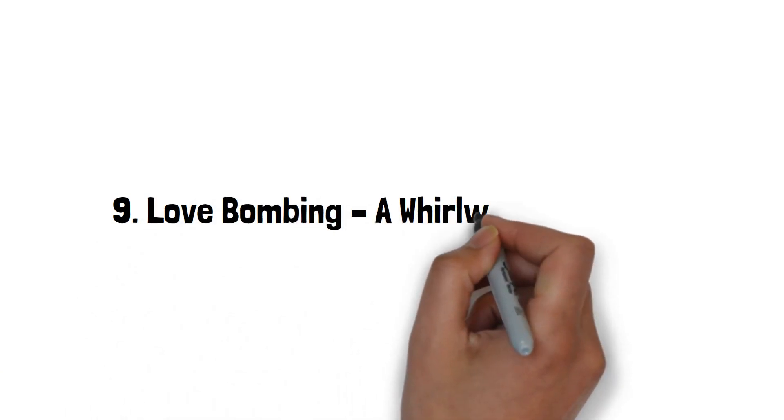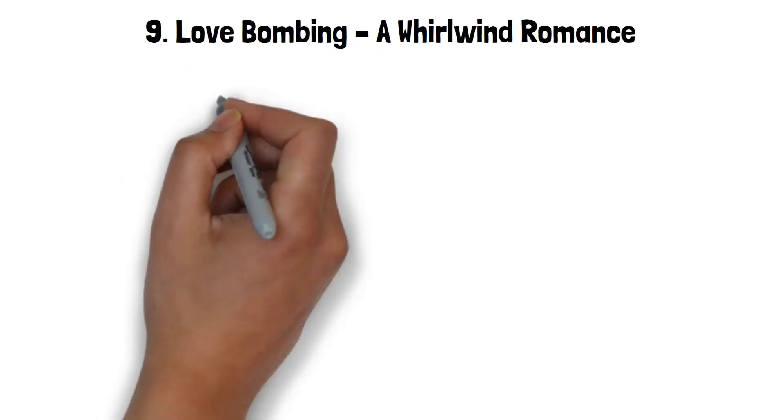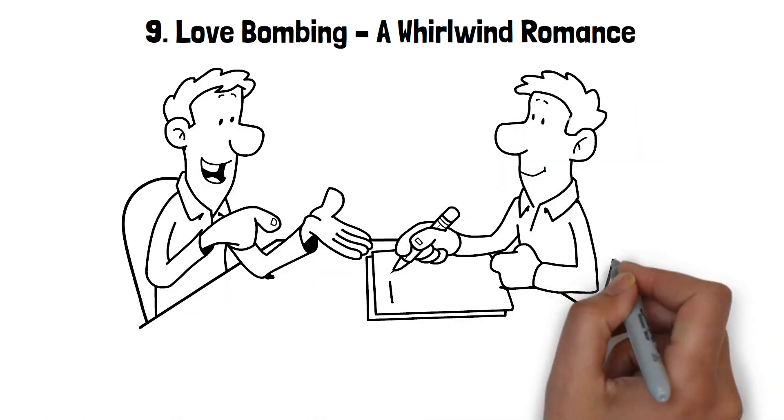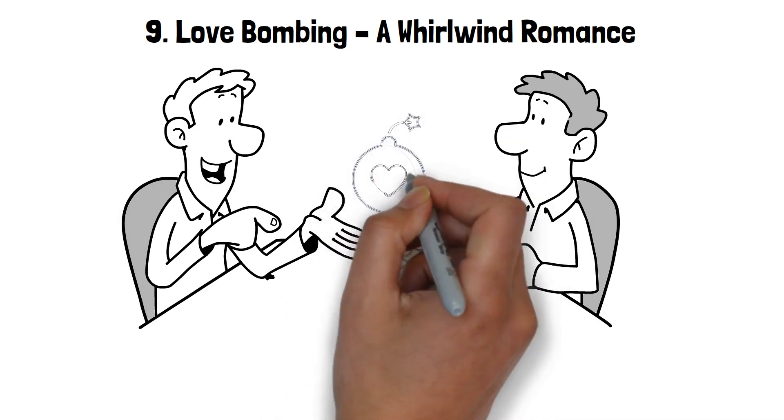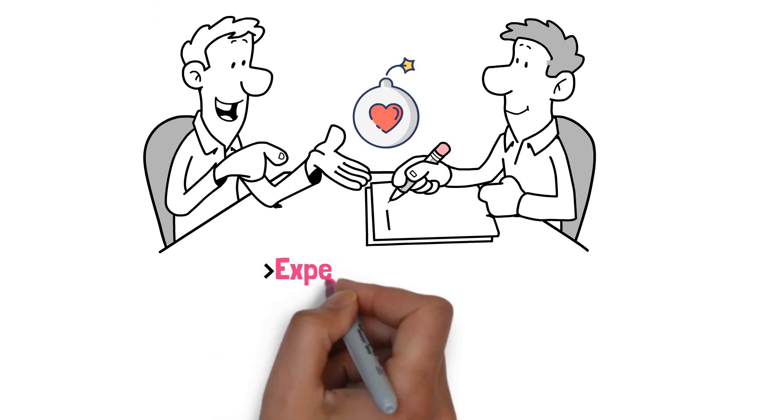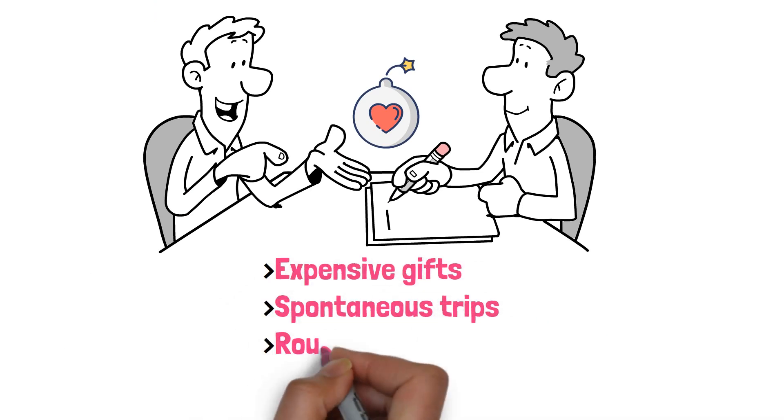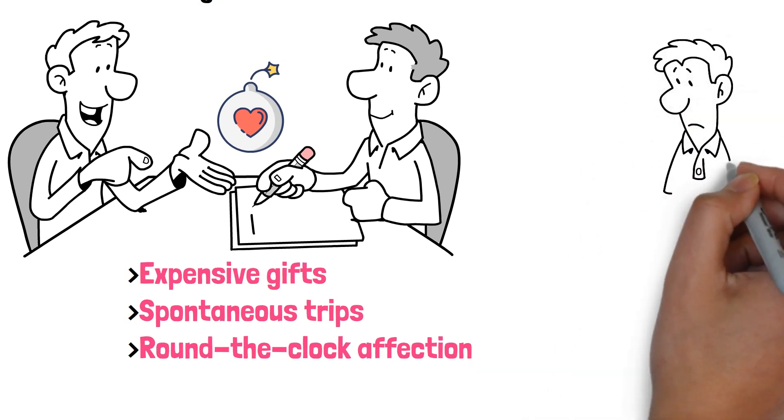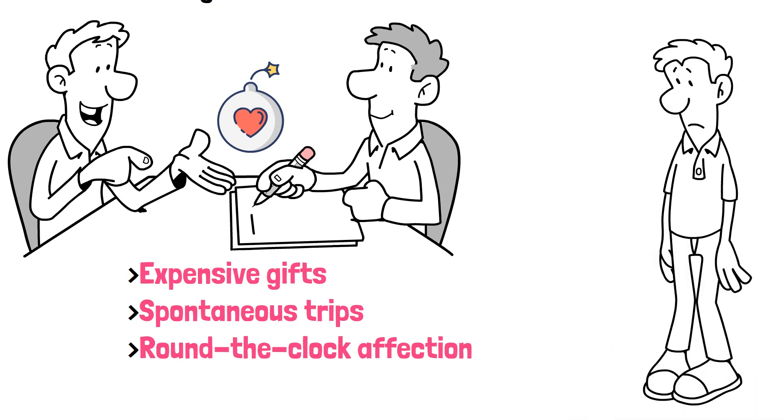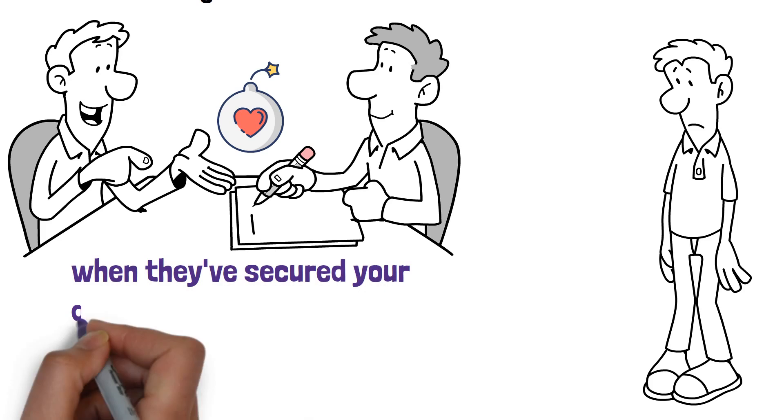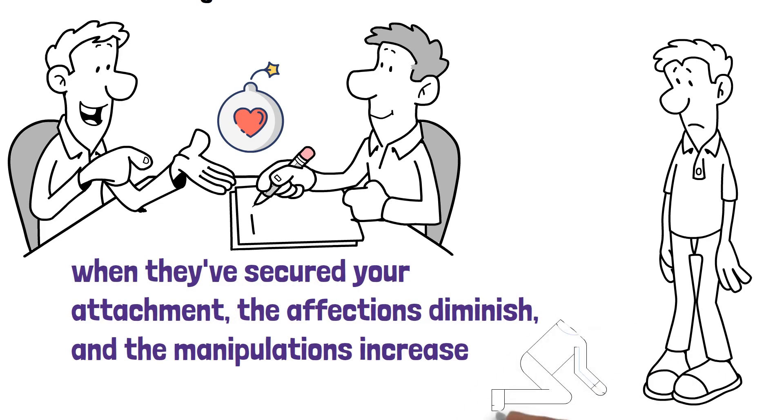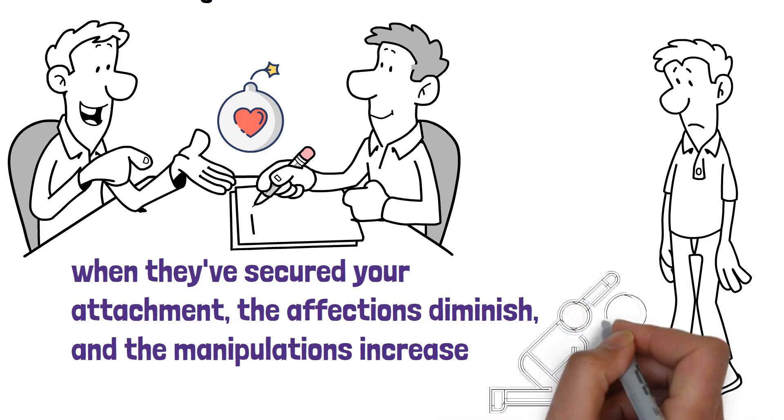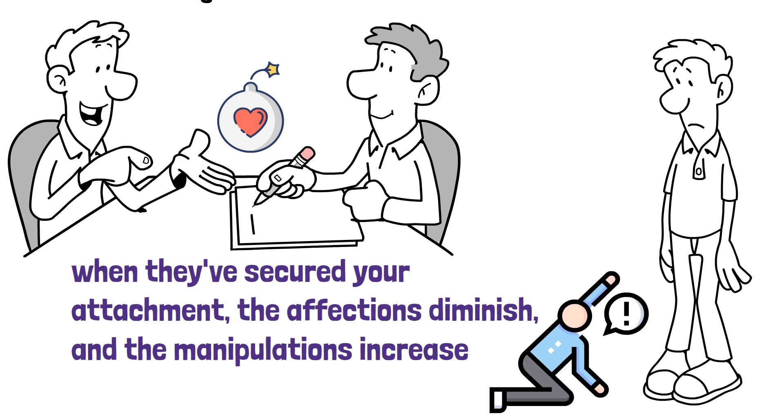9. Love bombing. A whirlwind romance. Have you ever felt like someone showered you with overwhelming affection and attention, only to pull it away suddenly? This is called love bombing. Initially, the manipulator might make grand gestures. Expensive gifts, spontaneous trips, or round-the-clock affection. They'll make you feel like you're the center of their universe. But here's the catch. It's a ploy to make you emotionally dependent on them, quickly. Then, when they've secured your attachment, the affections diminish and the manipulations increase. The transition can be jarring and leaves many feeling desperate to reclaim the earlier dynamic, making them more pliable to the manipulator's demands.